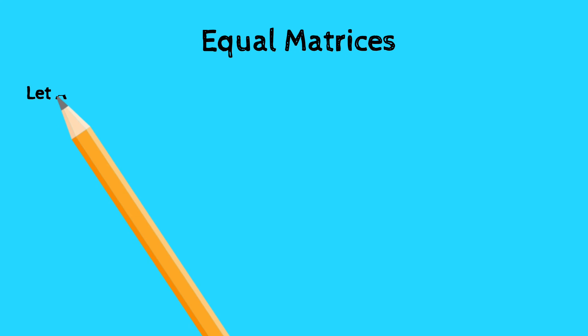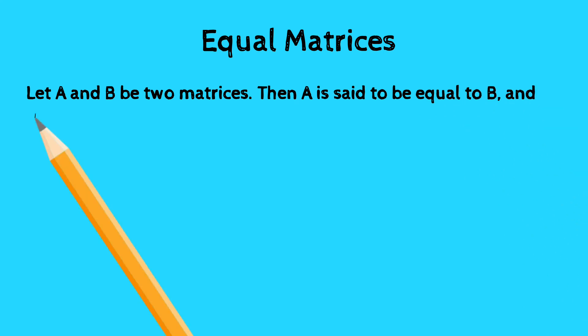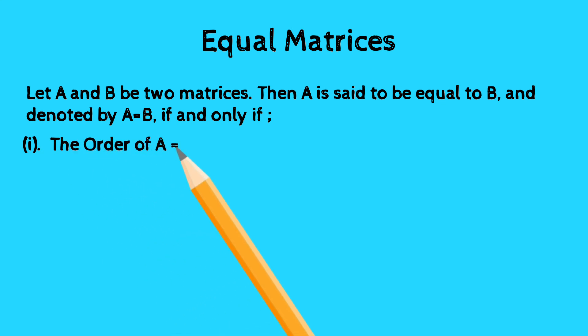Next point is equal matrices. Let A and B be two matrices. Then A is said to be equal to B, denoted by A = B, if and only if the order of A equals the order of B, and the corresponding entries are equal in both matrices.